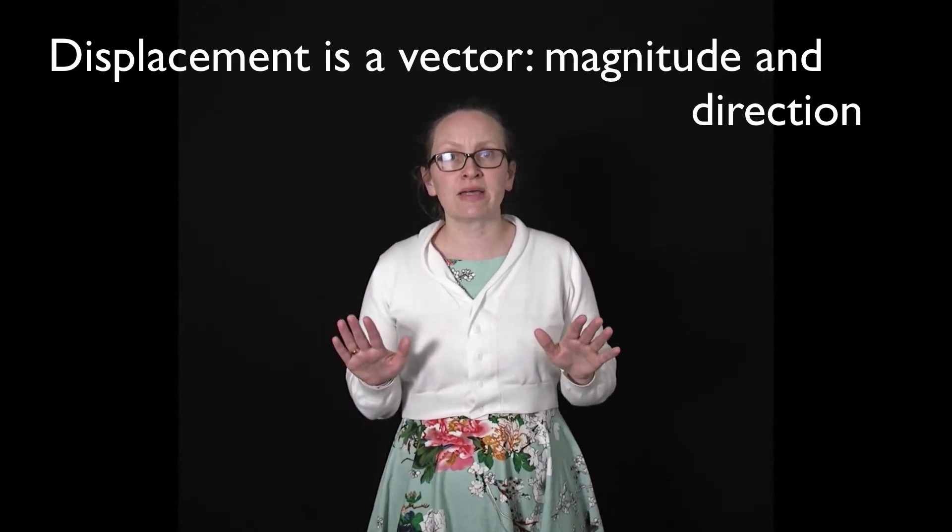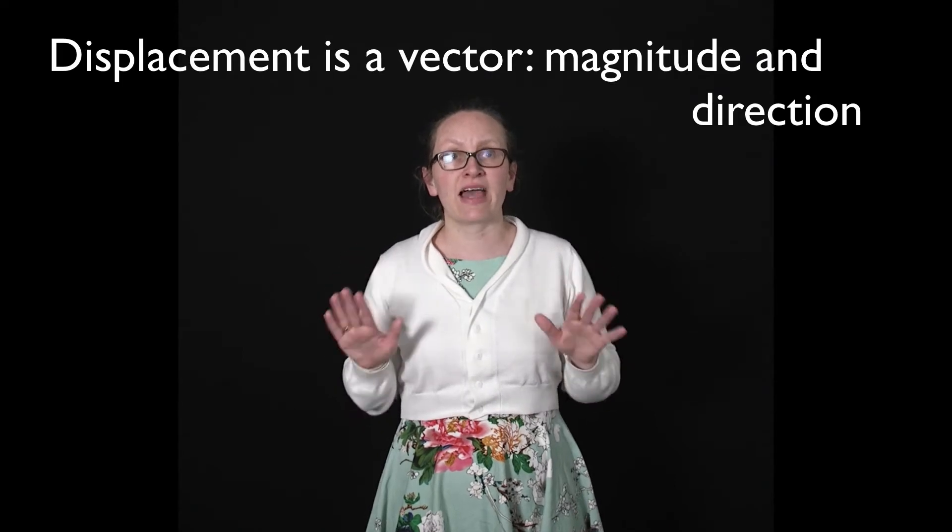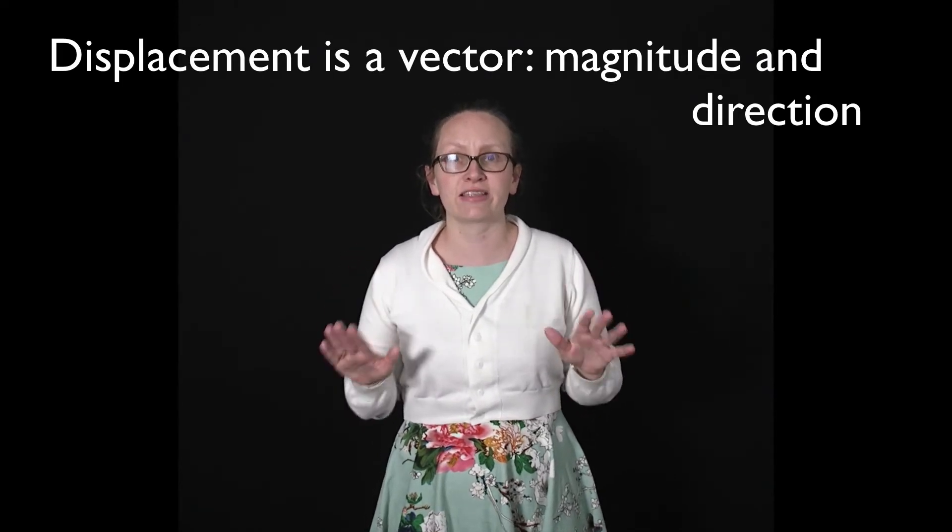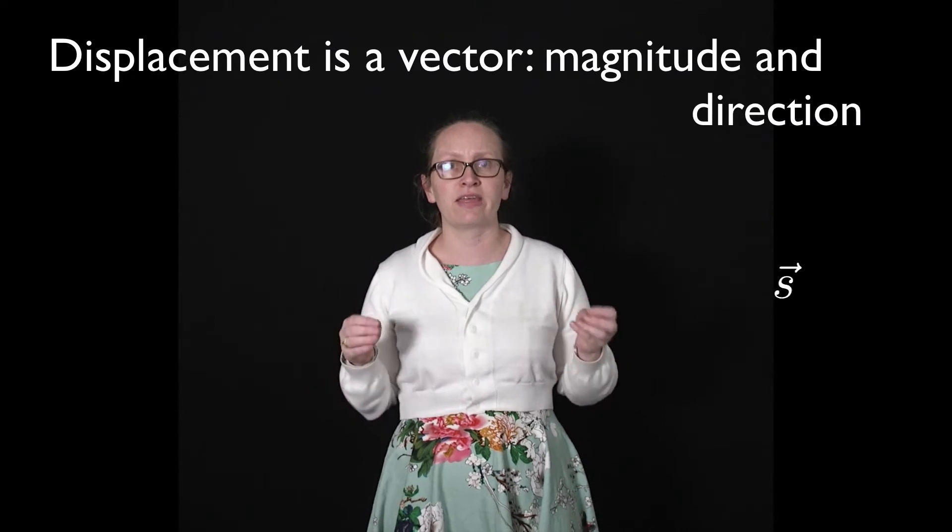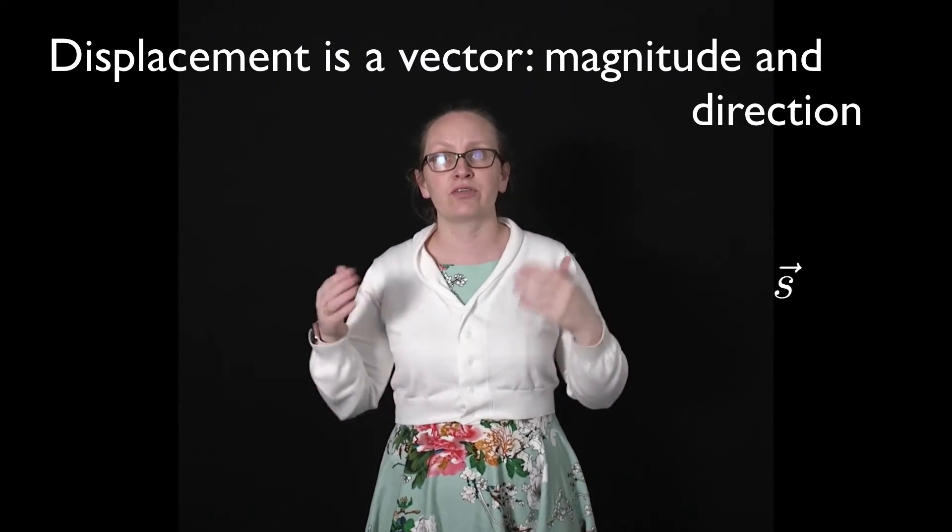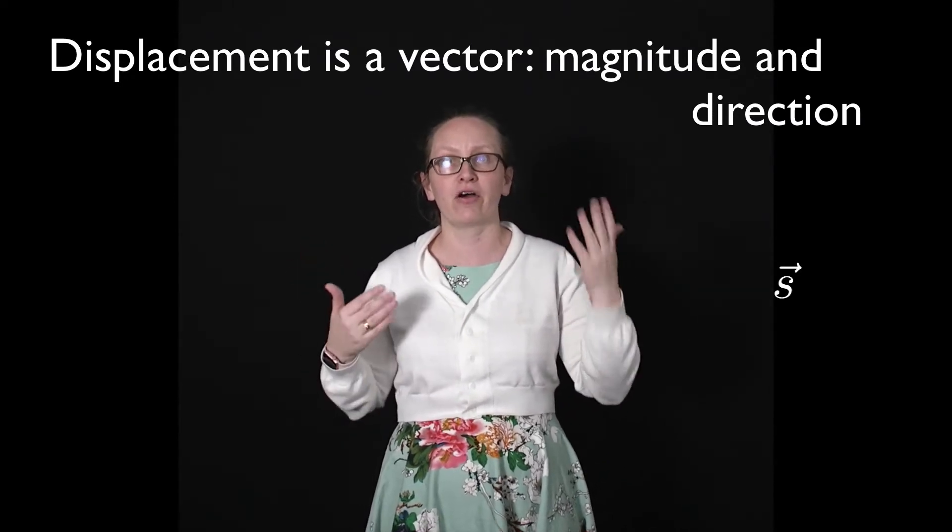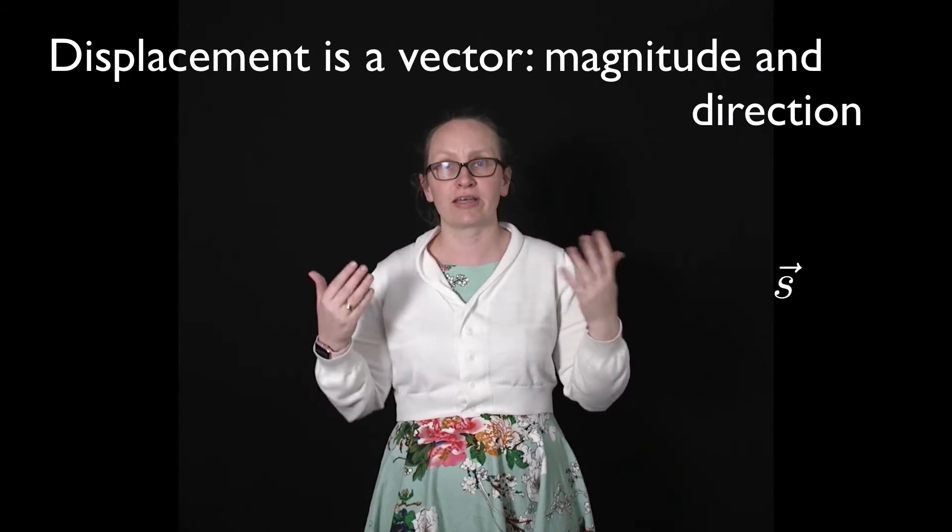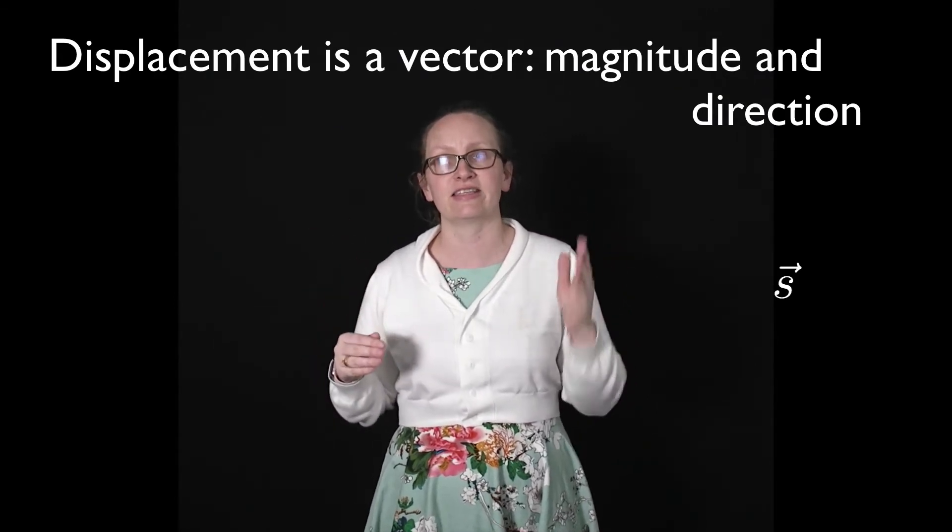So displacement is a vector. This means it has both a magnitude and a direction. It's often represented with the letter S, and we need to put an arrow on our letter S, or use some other notation to indicate that this is a vector.